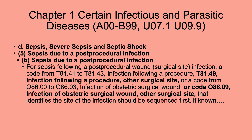First, sepsis due to post-procedural infection. Changes are shown in bold and deletions are crossed out in these slides. For sepsis following a post-procedural wound or surgical site infection, you code from T81.41 to T81.43 for infection following the procedure. It was also added T81.49, infection following the procedure, other surgical site. Code 086.00 to 086.03 stays, but A86.09, infection of the surgical wound, other surgical site, was added. So you now have more options to code for these.